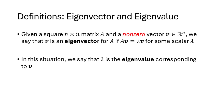Here's the definition. Given a square n by n matrix A and a nonzero vector V in Rn, we say that V is an eigenvector for A if Av equals lambda times V for some scalar lambda — that's the lowercase Greek letter lambda. In this case, we say that lambda is the eigenvalue corresponding to V. What we're saying is that when we multiply our matrix by a vector, we get the same result as just multiplying our vector by a scalar.